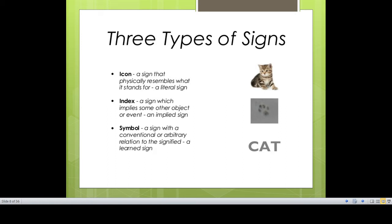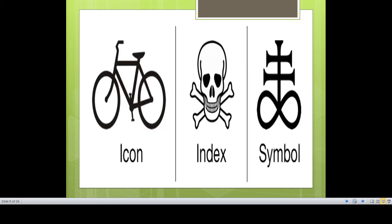Symbol is a learned sign. Through habitual social conventions, you learned that if you write F-I-R-E, it means fire. You can also see examples: a cycle or bicycle image — it looks like a bicycle, so it is an icon. A danger sign is an index, implying something. And you have a symbol which you have habitualized by daily usage or by convention, such as the medieval alchemists' symbol for fire — a conventional notation.